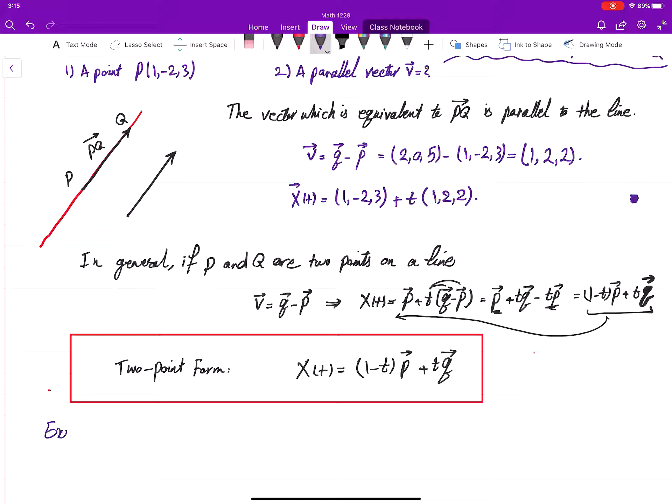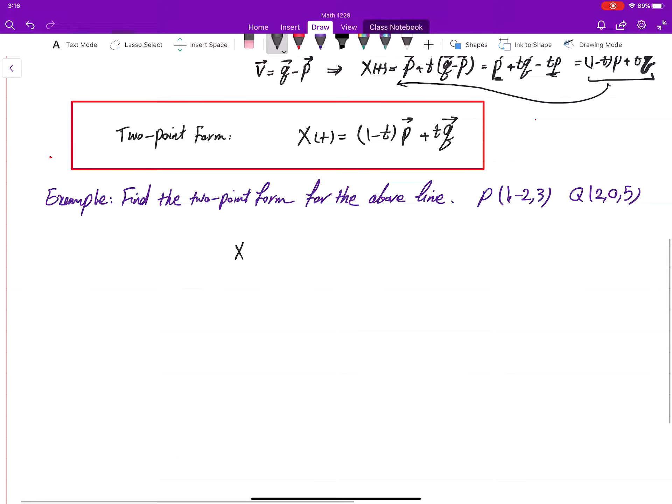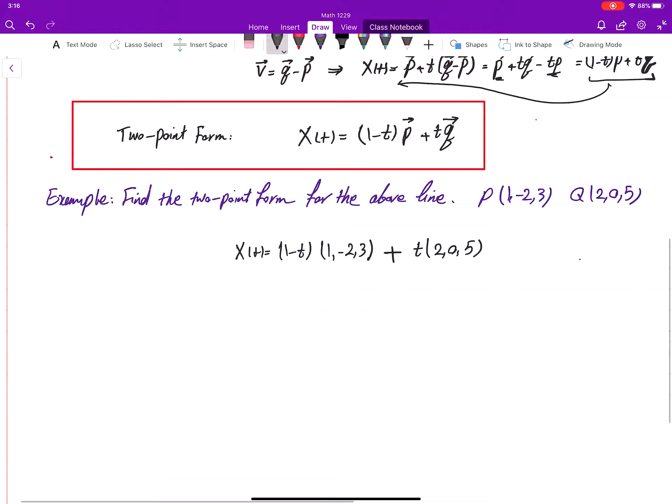Okay, let's do the example. Write the two-point form, find the two-point form for the above line. The above line had P (1, -2, 3) and Q (2, 0, 5). Well, just plug in everything in this equation: X(t) equals (1 - t) times (1, -2, 3) plus t times (2, 0, 5). Scalar multiply it by t and add it to what we have there.